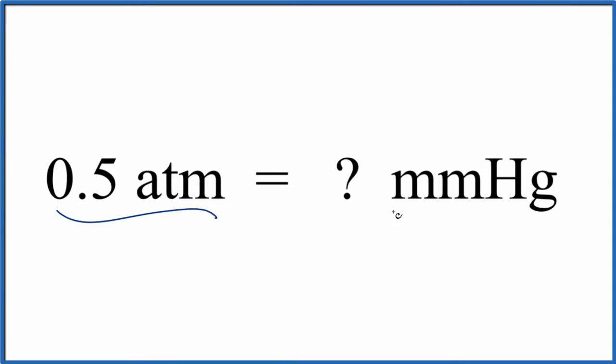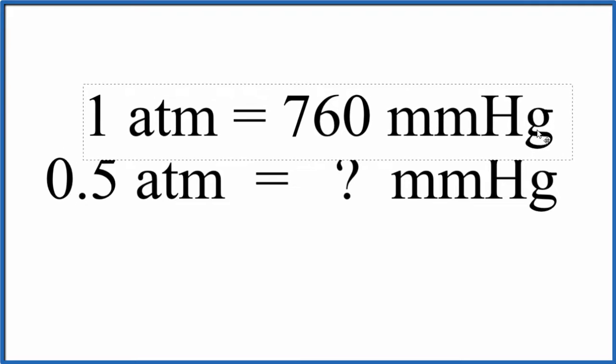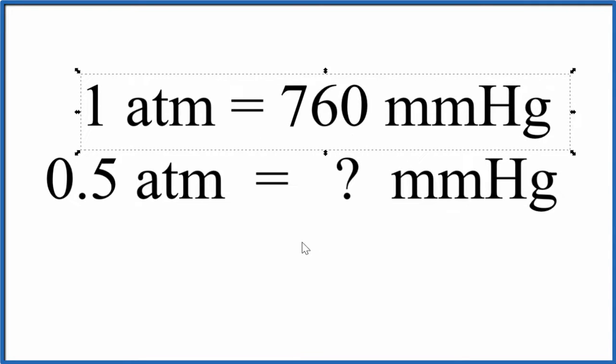Let's convert 0.5 atmospheres to millimeters of mercury, and we'll do it two ways. But the one thing you have to know, you have to memorize this or be able to look it up, is that one atmosphere is 760 millimeters of mercury. So this will be our conversion factor.